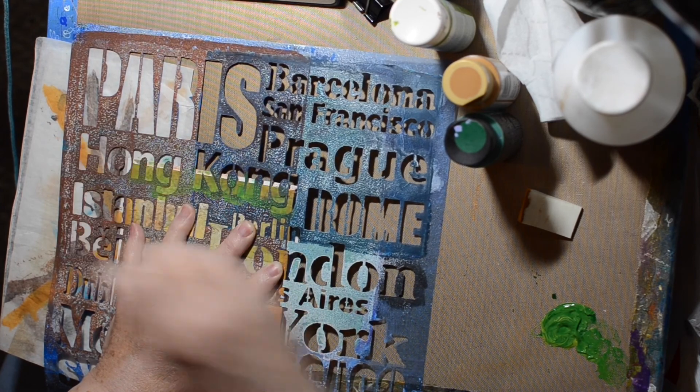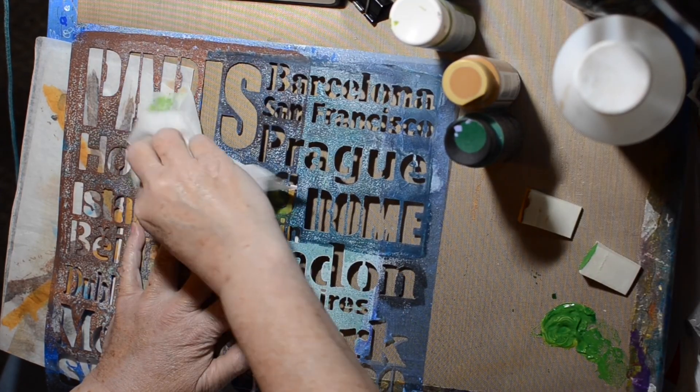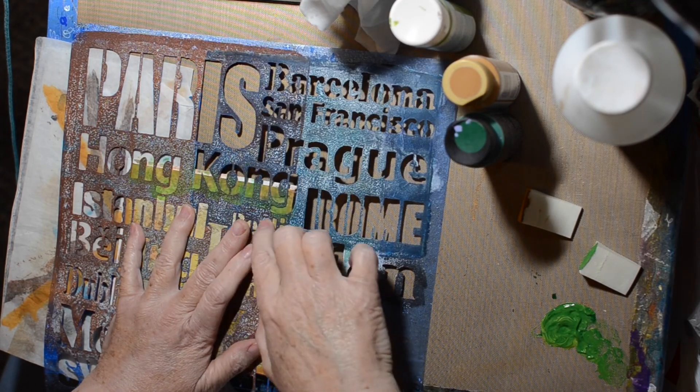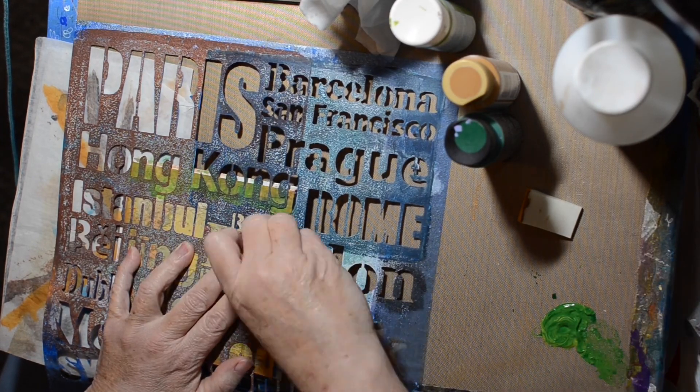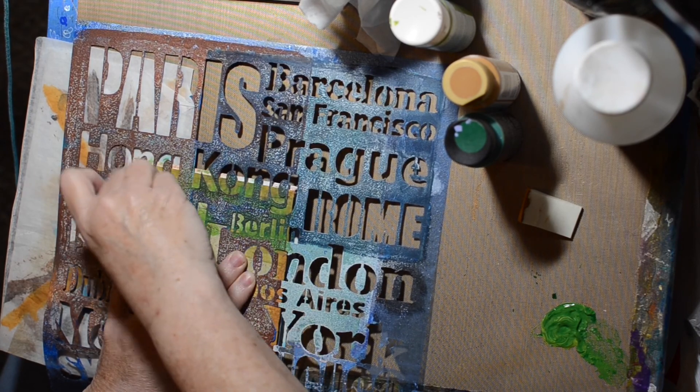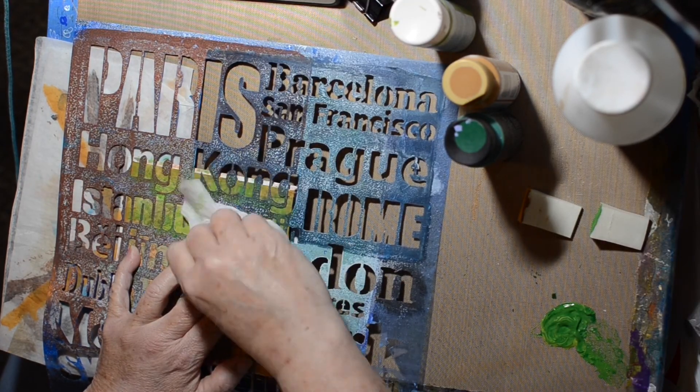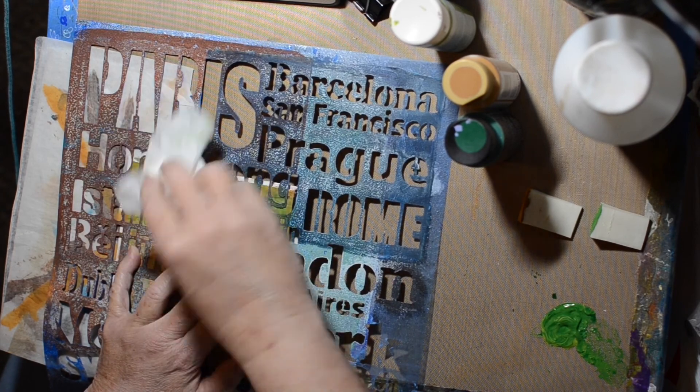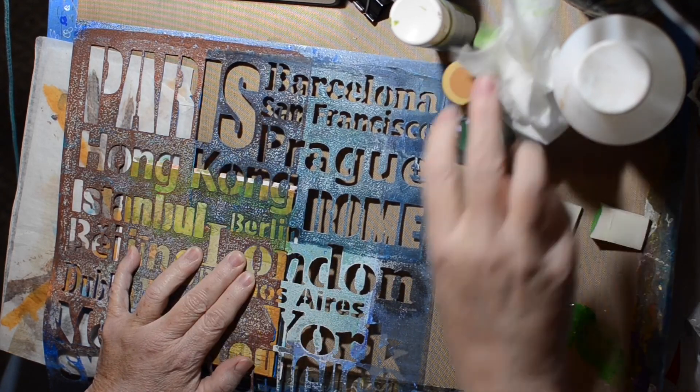And then I have this stencil with all these places, location, location, location, right? And I'm doing it so they're cut off, so you don't see the whole thing. And I am doing the paint really light, so it's just kind of a shadow of it.